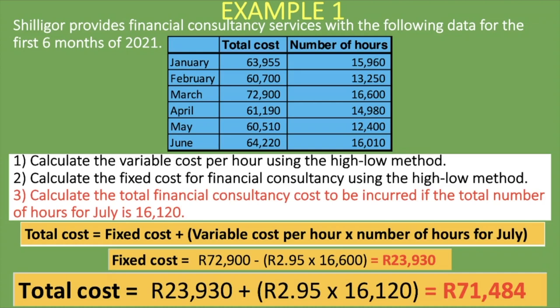That is how you calculate the total cost using the high-low method. You first calculate your variable cost per hour, then your fixed cost, and then you can calculate your total cost. I hope it has made sense and you've gained value from this lesson. If you have, consider subscribing to our channel, liking this video, and sharing it with those you think it might help.